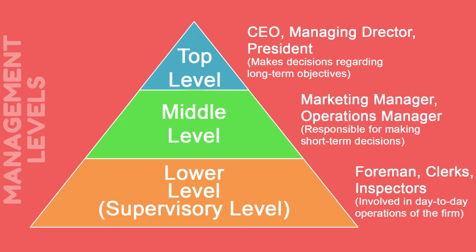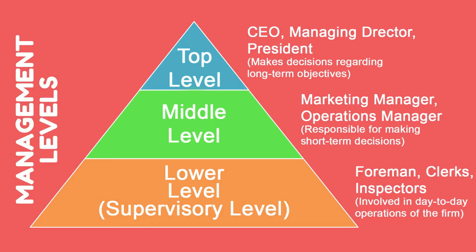Before continuing with the topic, we need to understand the different levels of management. As you can see in the diagram, management levels are divided into three according to their functions and duties. They are top level management, middle level management, and lower supervisory level management. Top level management consists of CEO, managing director, and president. They usually make decisions regarding long-term objectives of the firm and guide overall activities towards the ultimate goal of the organization.